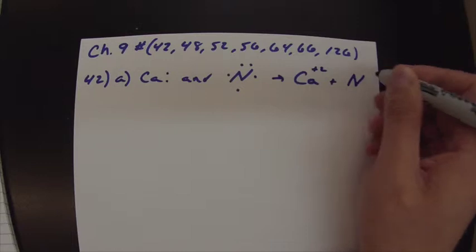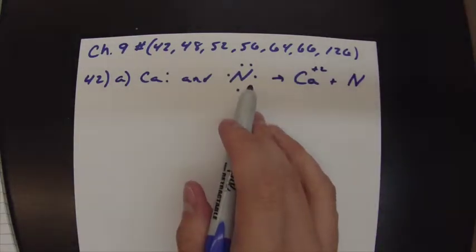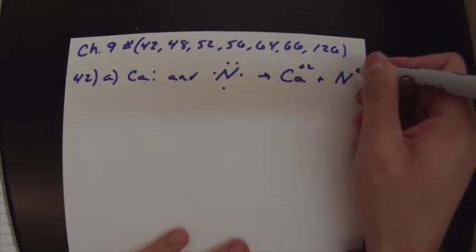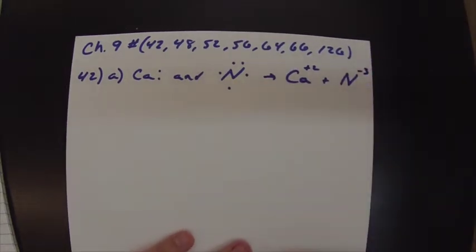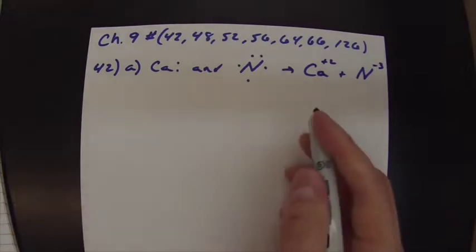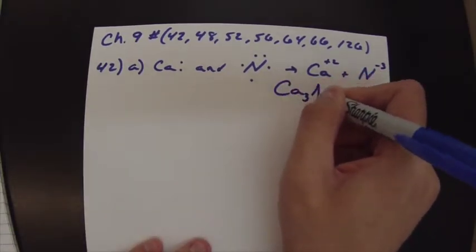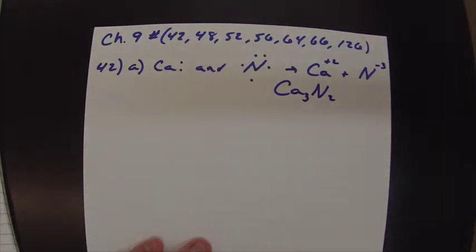And nitrogen is in the same boat. It can either gain three, one, two, three, or lose five. It's a lot easier to gain three. And if you gain three electrons, you become negative three. So then if you have a positive two and a negative three, your formula has to be that.